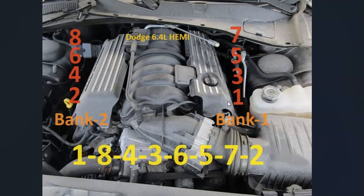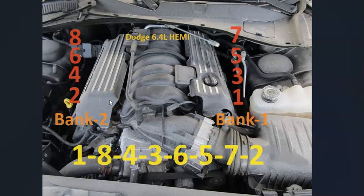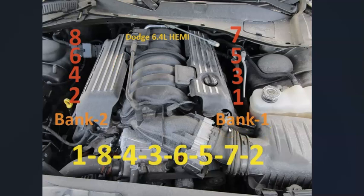The cylinder locations: when you open up the hood, on the right side — the driver side — is going to be cylinders one, three, five, and seven. On the left side, or the passenger side, is going to be cylinders two, four, six, and eight.